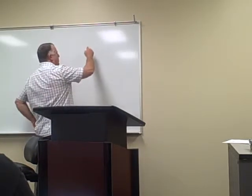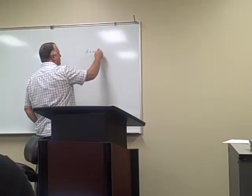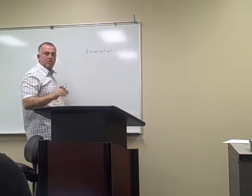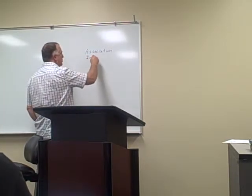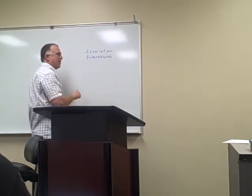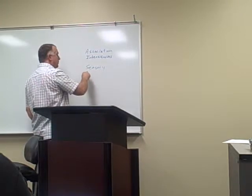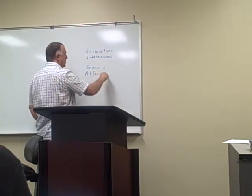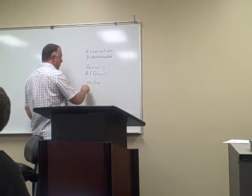What is the functional unit of the nervous system? It's a neuron. We have different kinds of neurons: association neurons, also called interneurons; sensory neurons, which are called afferent; and motor neurons, which are called efferent. Those are three different types of neurons.